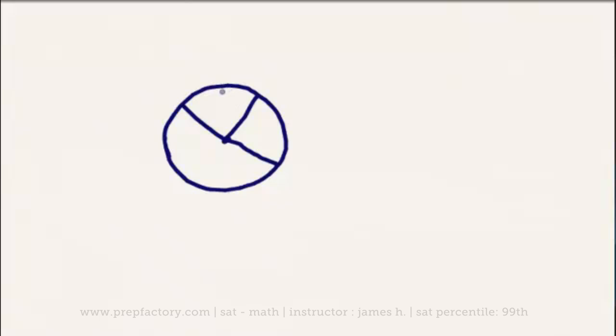A line drawn directly through the center of the circle all the way across is what's called the diameter, which is going to be equal to 2 times its radius.